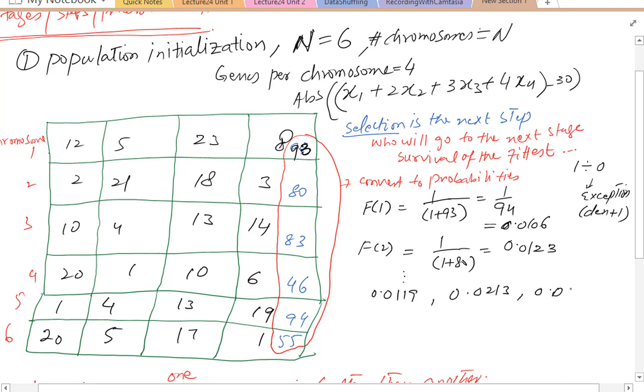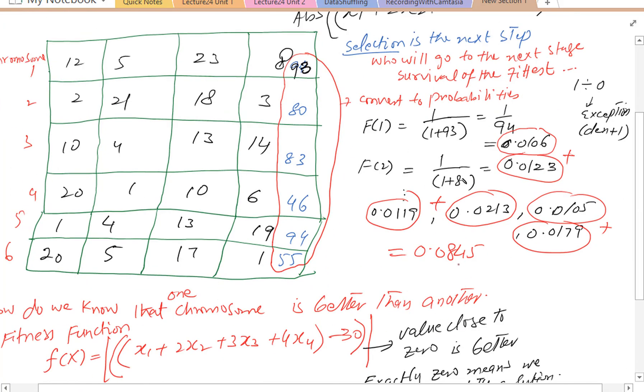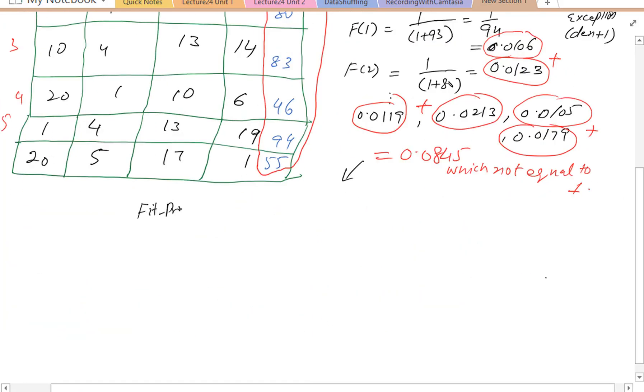So we can similarly compute for other chromosomes. Now if we sum these 6 fractions, these do not sum to 1. For computing fitness probabilities, we can take fitness fractional value and divide by the sum of fractions.